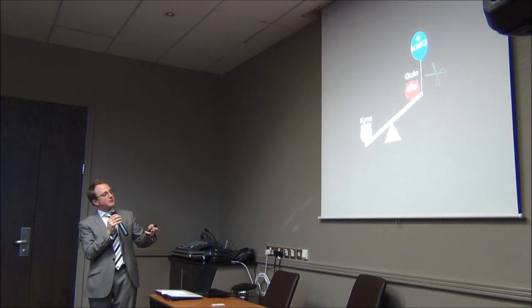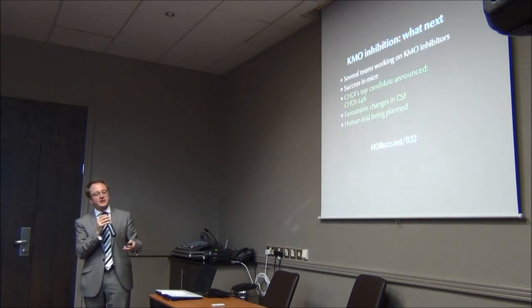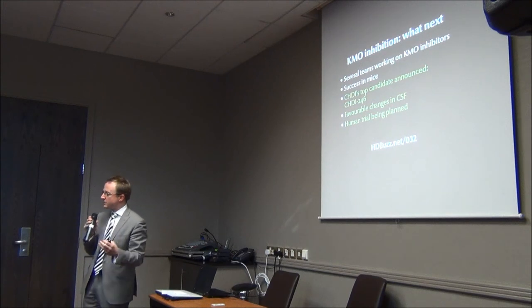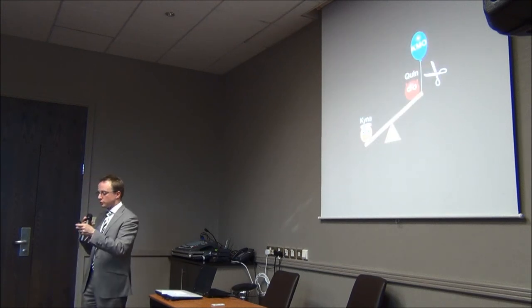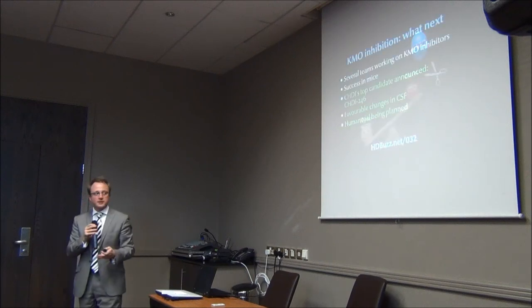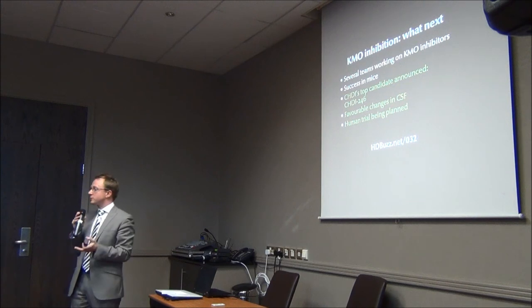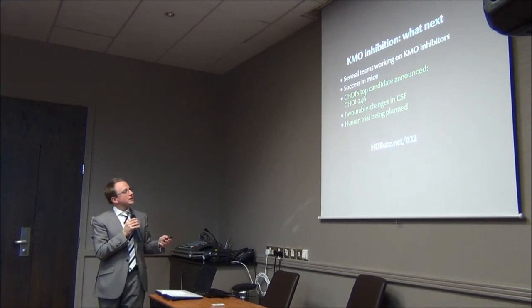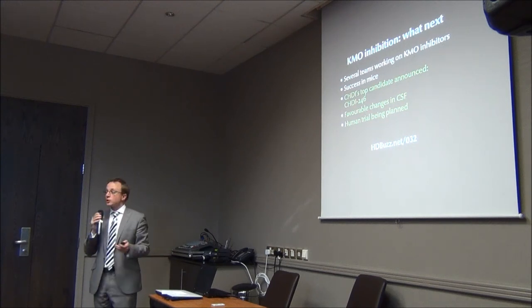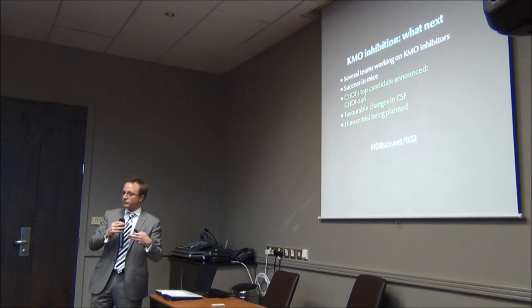And the machine that decides whether there's more of one or the other is called KMO. And it looks like if you can get rid of the KMO, if you can reduce the activity of KMO through drugs called KMO inhibitors, you should be able to restore the normal balance and help to protect the brain cells instead of damaging them. So there's now, there was a big paper that was published a couple of years ago where a KMO inhibitor was given to HD mice. And they lived much longer, about 30% longer. CHDI are also working on this. And that means that things will happen quickly and will be done extremely well.